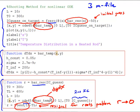In bar_temp, our constants are defined, and then just as we've been doing, we define dT/dx as a system of two first-order differential equations for the initial value problem solver — ODE45 in this case.